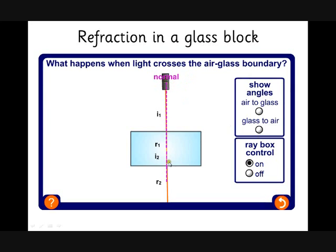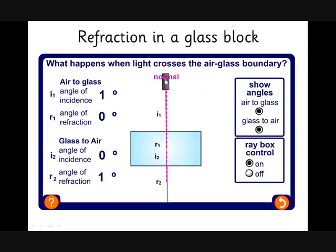If I turn the ray box on, we get a nice beam of light there so we can show what's happened. We're going to show all the angles in this so that we can see clearly what's happening. As we tilt the ray so it's at bigger and bigger angles of incidence, we get an angle of refraction. The angle of refraction gets bigger, but the key thing to notice is the angle of refraction is smaller than the angle of incidence. It's refracting, as we say, towards the normal.